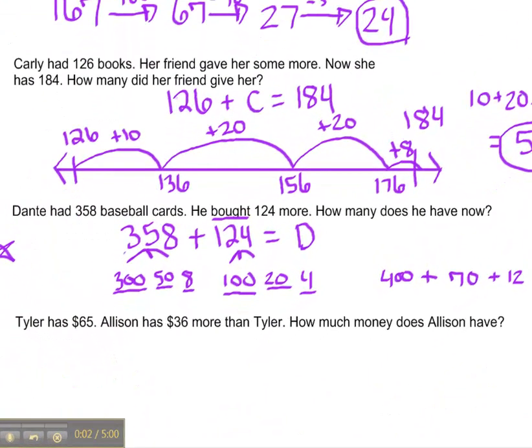For our last problem type here, let's take a look at our story problem. Tyler has 65 dollars. Allison has 36 dollars more than Tyler. How much money does Allison have? Alright, let's start to write our number sentence, or equation. Tyler has 65 dollars.